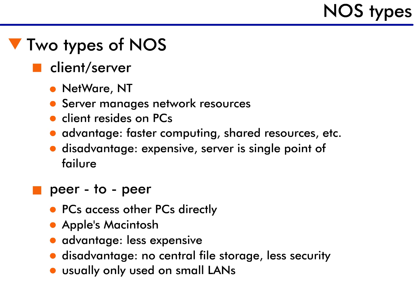Peer-to-peer networking means exactly what the name implies. Peers communicate directly with peers, or PCs access other PCs. Peer-to-peer network operating systems allow users to access the hard drive of another user over the network. In 1984, Apple introduced the Macintosh computer, which was the first product with an OS that supported peer-to-peer networking.